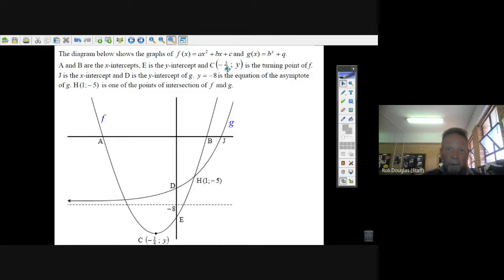Minus 3 quarters, and y is the turning point of the parabola. And j is the x-intercept, and d is the y-intercept of g. Okay, that's the exponential equation.